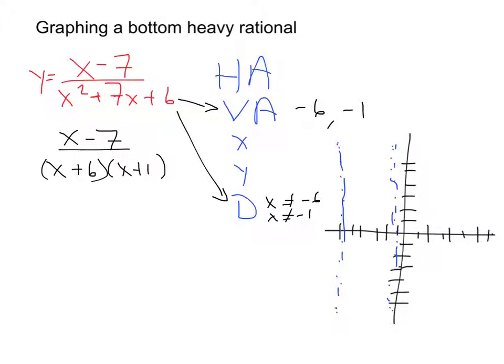Now my horizontal asymptote has to do with heaviness. So bottom-heavy polynomials, or rational expressions, are actually the easiest because they always have a horizontal asymptote just at y equal to 0. So my horizontal asymptote is going to be along the x-axis. So here is my horizontal asymptote along the x-axis.